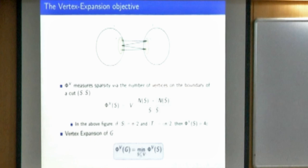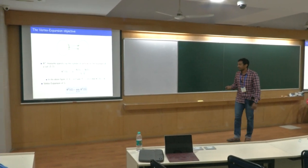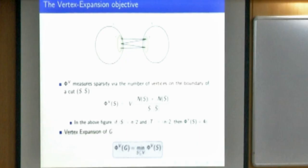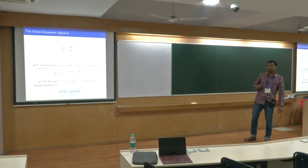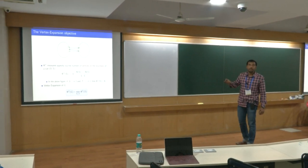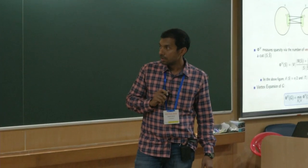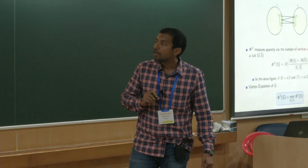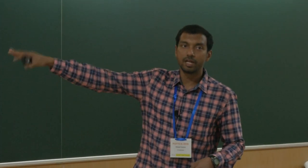The vertex expansion of a given graph is the minimum over all two-way partitions of the vertex expansion of the partition considered. It is just a normalization factor. For the edge expansion objective, you would not be multiplying by the vertex size.